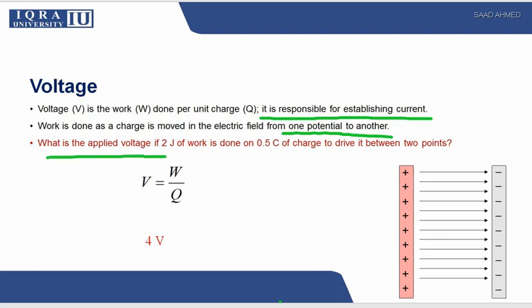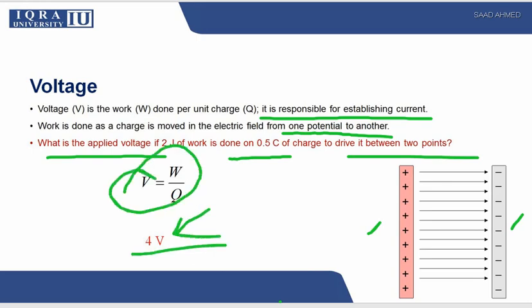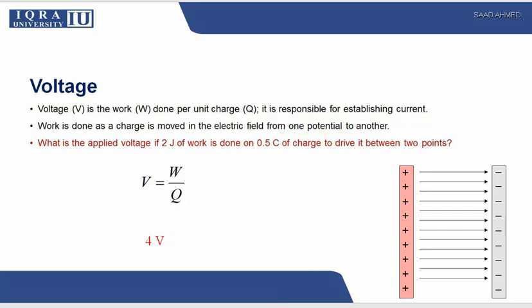What is the applied voltage if 2 joules of work is done on 0.5 coulombs of charge to drive it between two points? These are the two points and we want to move the current. So this is the formula and you can apply and get this answer of voltage. W will be the work done, that is 2, and 0.5 will be the charge, so this gives you 4 volts. I hope you are following.